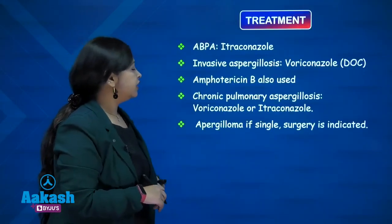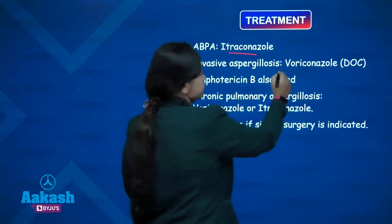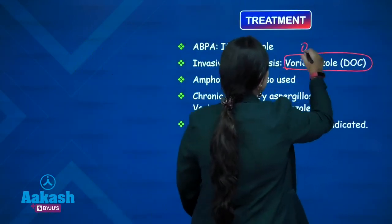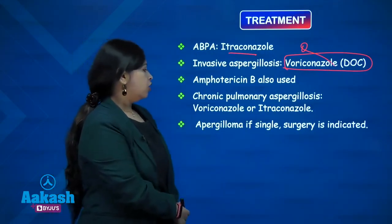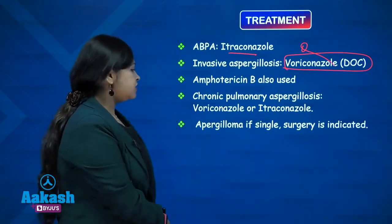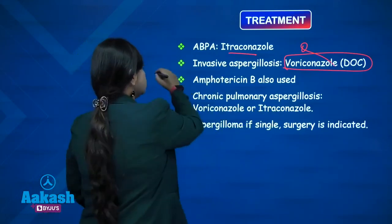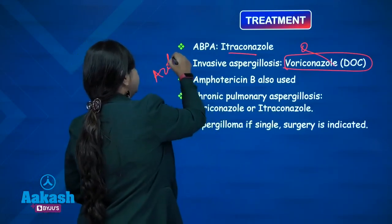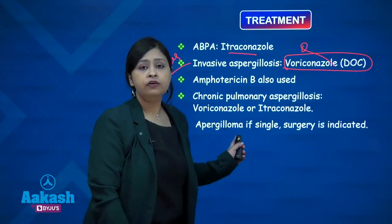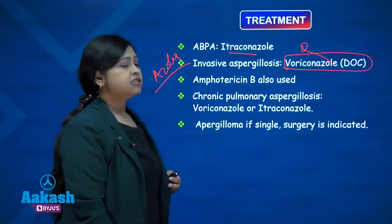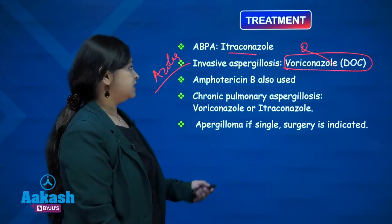Coming to treatment: ABPA is treated with itraconazole. Invasive aspergillosis — voriconazole is the drug of choice; amphotericin B can also be used. Chronic pulmonary aspergillosis: voriconazole or itraconazole is used. Basically azoles are used for treatment of aspergillosis. Aspergilloma, which is a fungal ball, surgery is indicated if it is a single fungal ball.